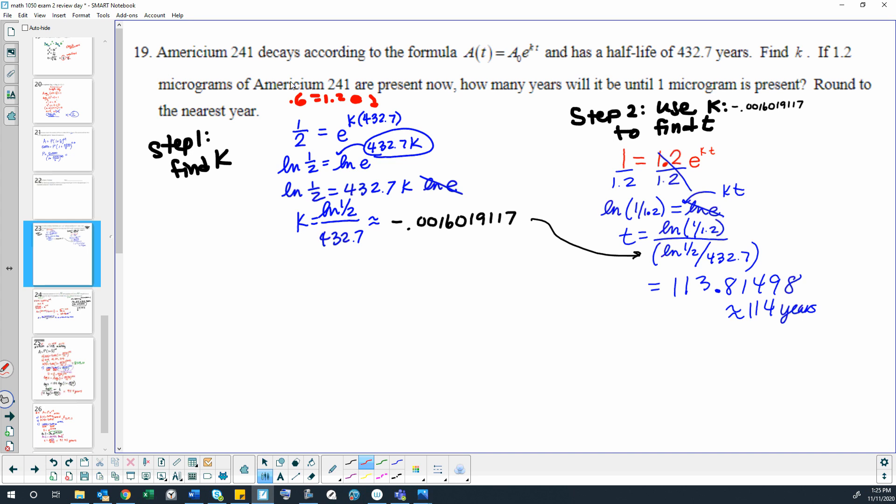And it really doesn't matter what amounts at all that we use, because if it's half-life, then this is always going to turn into a half, because the amount after the half-life time is going to be half of the original amount. So dividing that out will always give us half.